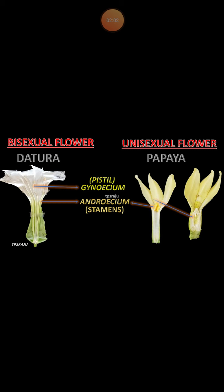A flower which contains both stamens and carpel is called a bisexual flower. This is also called a hermaphrodite flower, or otherwise we can say it is a perfect flower.